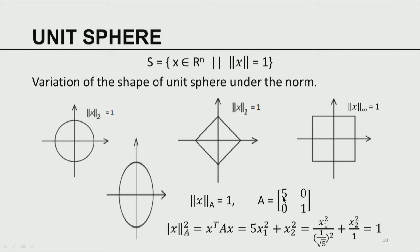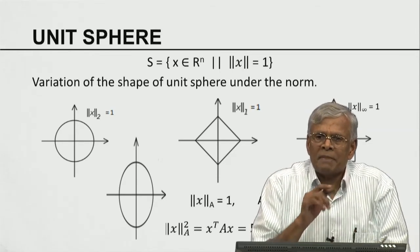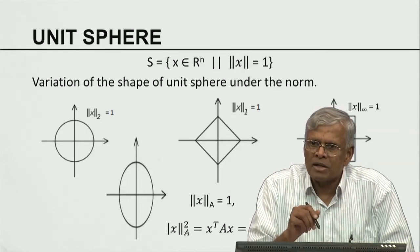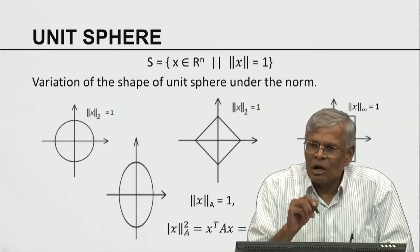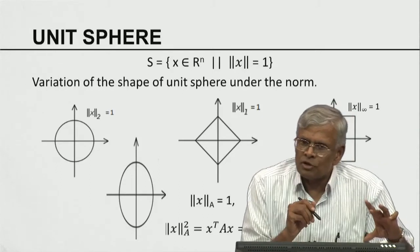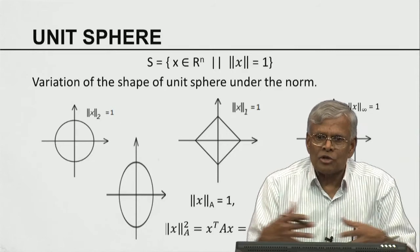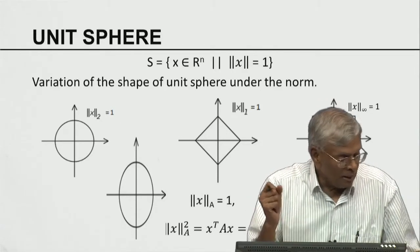When you pick matrix A equal to [5,0;0,1] — a symmetric positive definite matrix — the unit sphere in the energy norm gives an ellipse: x1 squared over a squared plus x2 squared over b squared equals 1. The geometrical figure naturally morphs and its shape changes if you change the definition of a norm. Mathematics is a man-made science — you have freedom, but you must be consistent with the three rules for a norm.